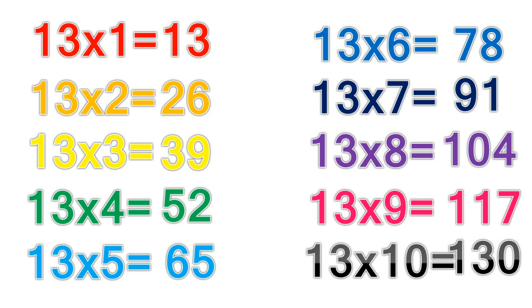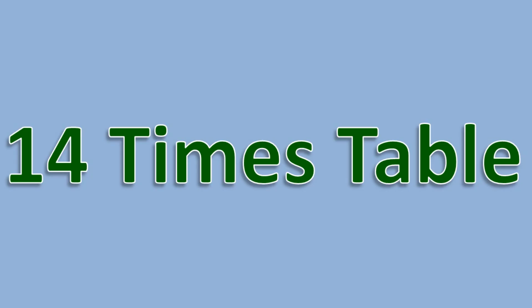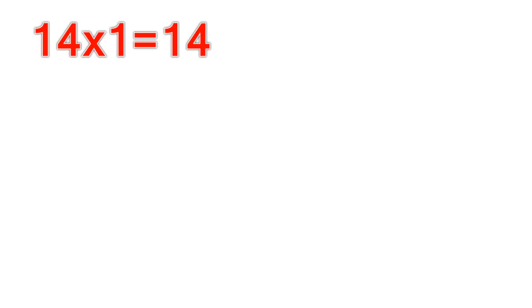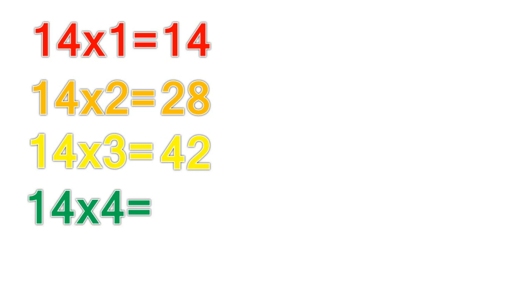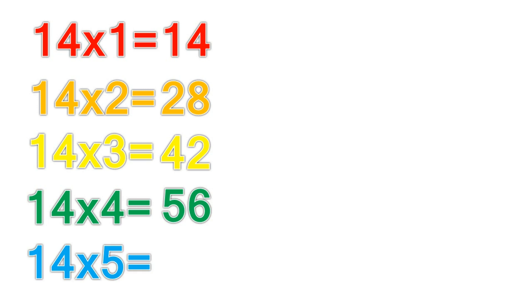14 times table. 14 times 1 equals 14. 14 times 2 equals 28. 14 times 3 equals 42. 14 times 4 equals 56. 14 times 5 equals 70.